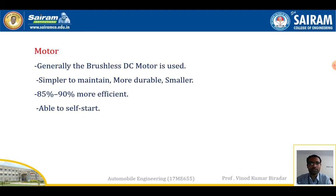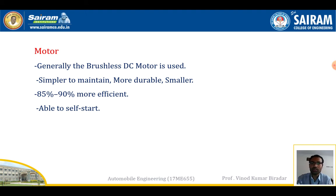The main function of the motor: a brushless DC motor is generally used here. It is simple to maintain, more durable, smaller, 85 to 90 percent efficient, and able to self-start. From the batteries, we supply energy to the motor, and from the motor it is supplied to the transmission system, which distributes energy to all four wheels.